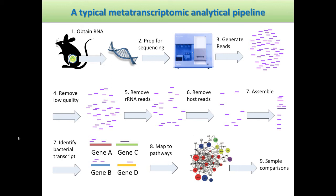This is what a typical metatranscriptomic analytical pipeline might look like — pretty similar to a metagenomics pipeline. We obtain the RNA from the mouse and prepare it for sequencing, which is a step where we might want to enrich for messenger RNAs. We generate the reads, remove low quality reads, remove the ribosomal RNAs, and remove host reads — hopefully leaving something at the end. Then we can assemble, identify the bacterial transcripts by doing this mapping, and then start mapping into pathways to understand what kind of biological systems are actually being upregulated or differentially regulated in your samples.